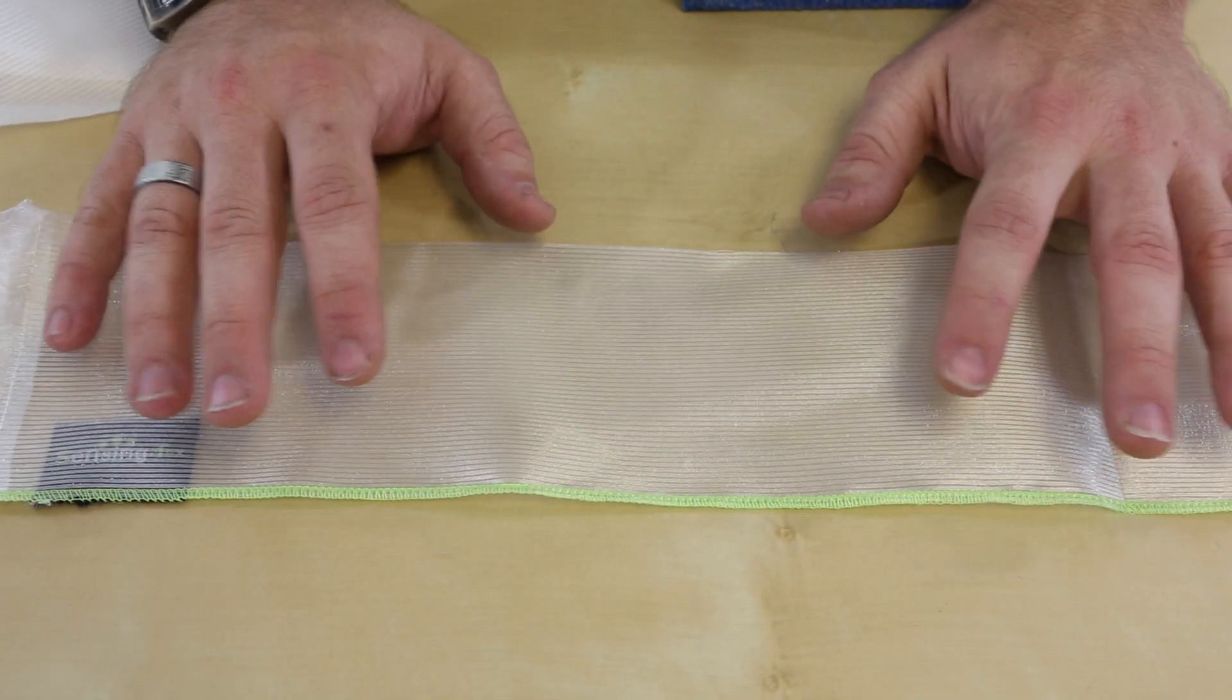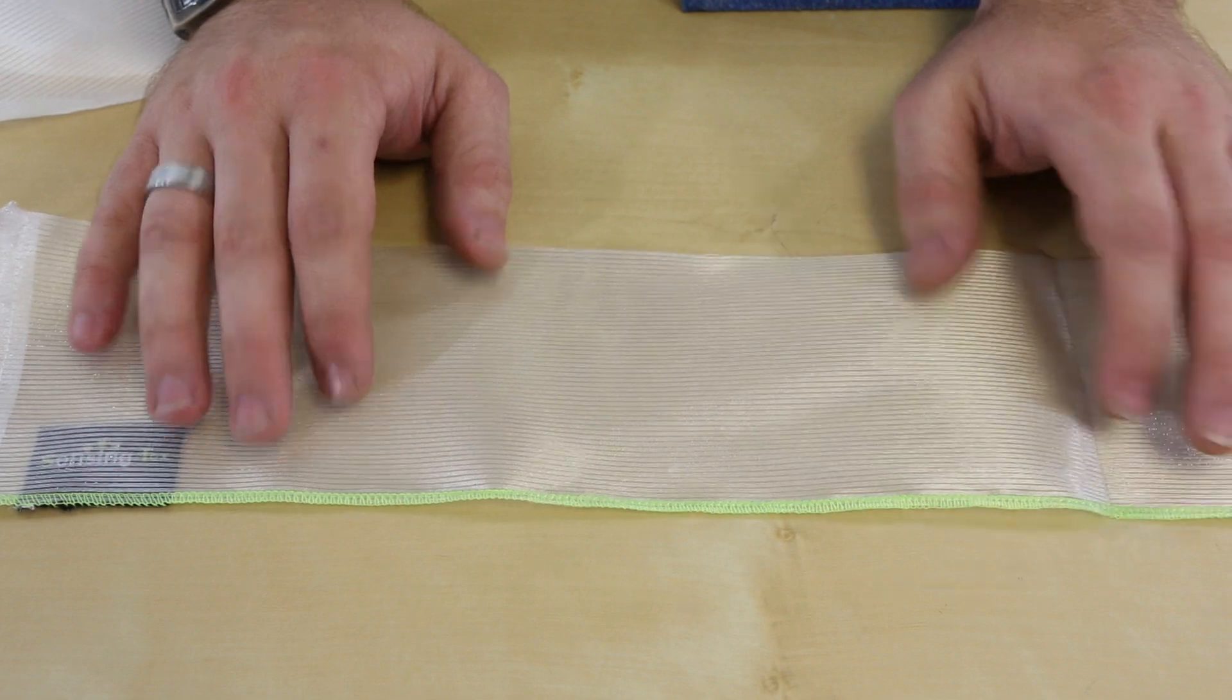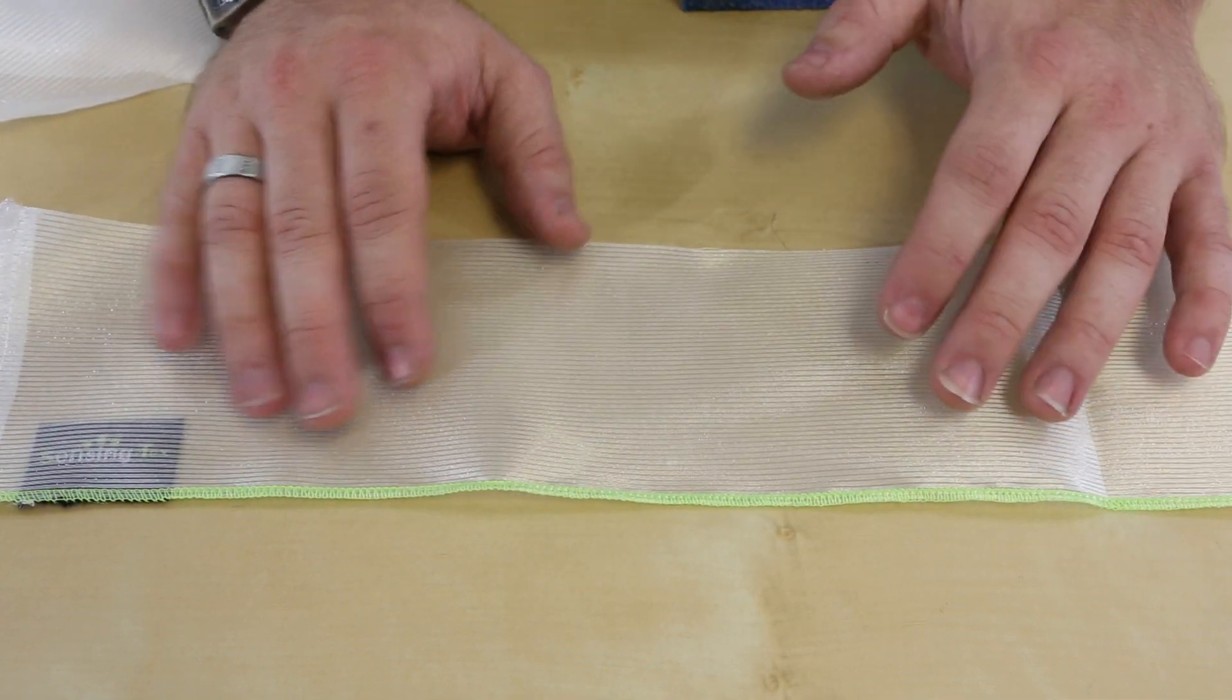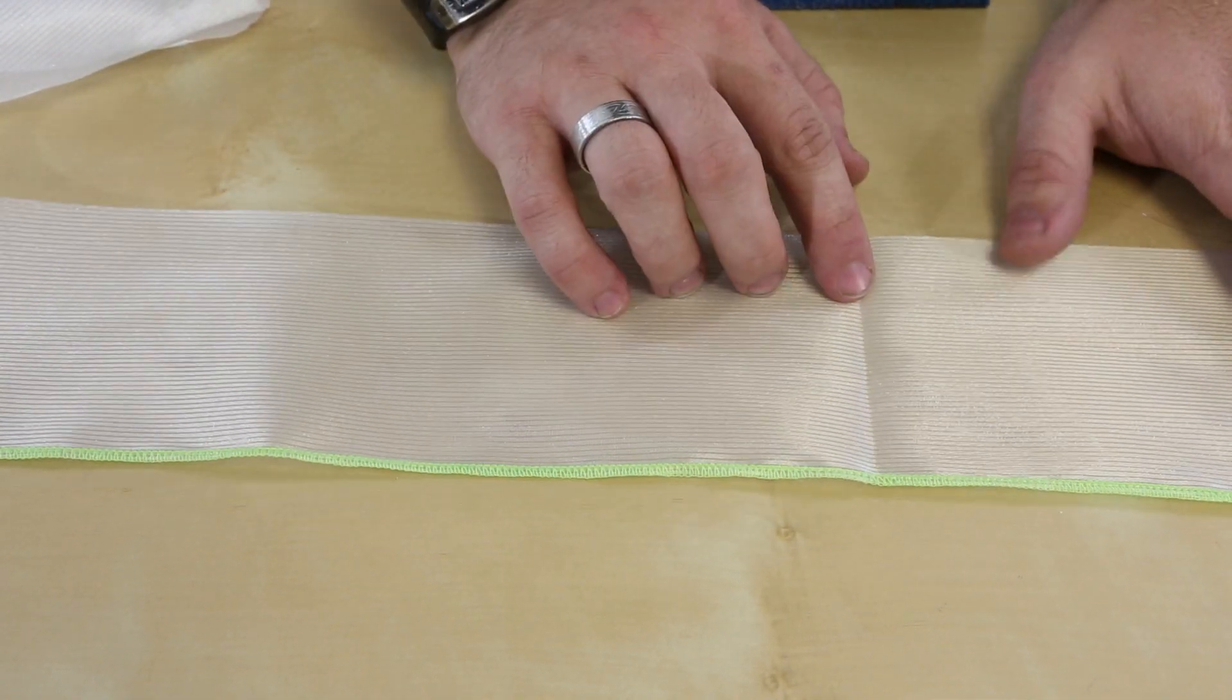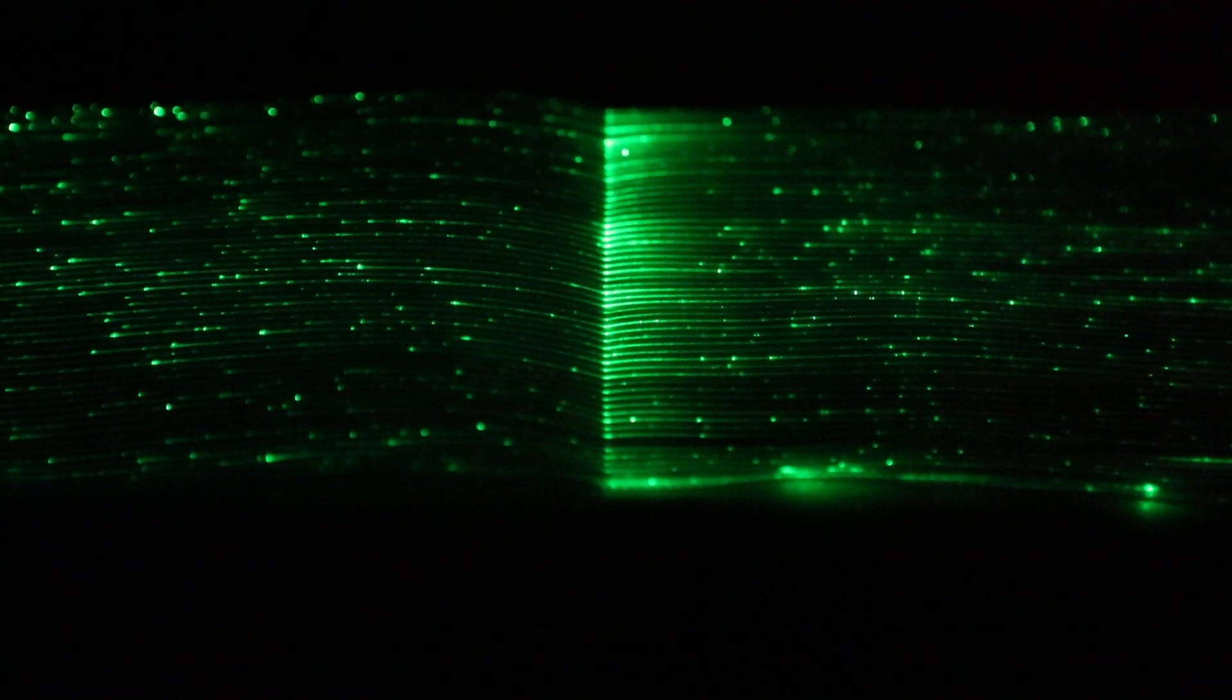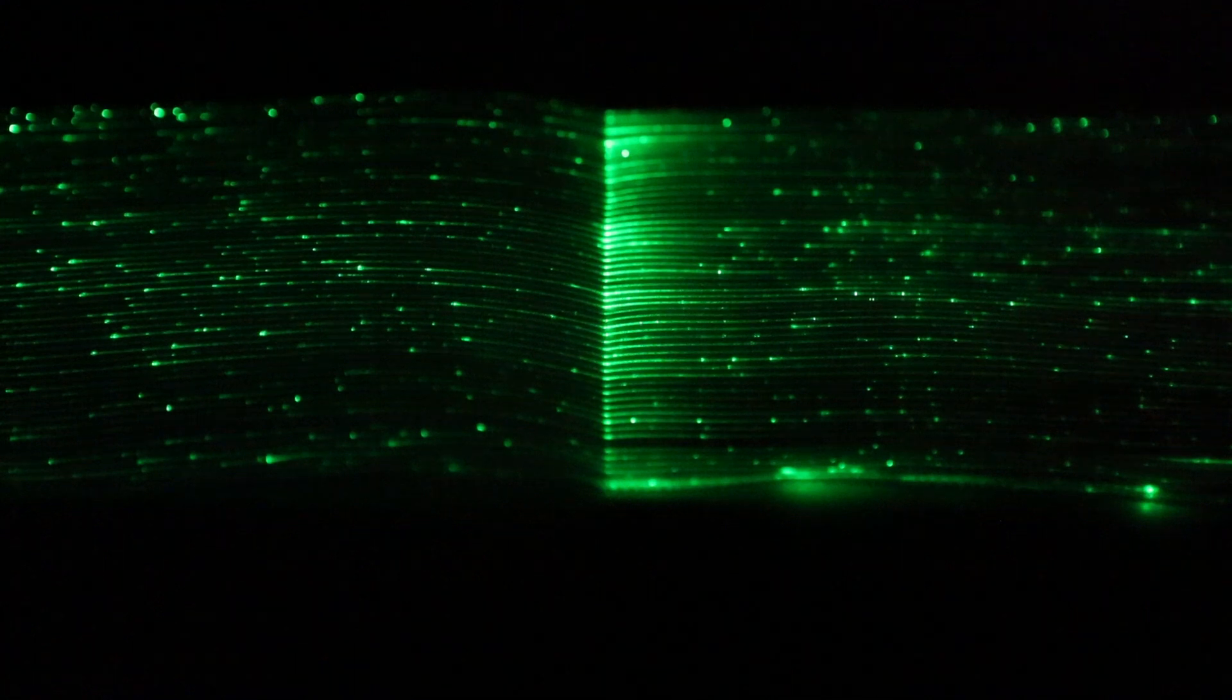The fiber optic cables in this fabric are a little fragile, so you want to handle it gently. Anywhere that you get a scratch or a nick on the fibers, light's going to leak out, and it'll make a bright spot in the fabric. As a matter of fact, on this particular piece, we've creased the fabric to show you the damage that that can cause. When you crease the fabric, it creates a stress point in the fibers and a lot of light leaks out there, creating sort of a line of light in your fabric.